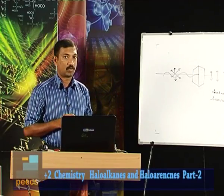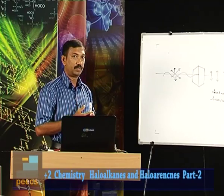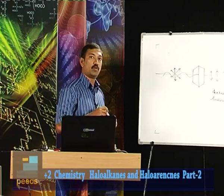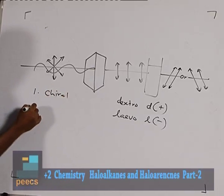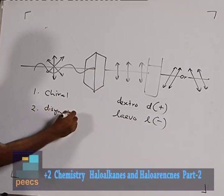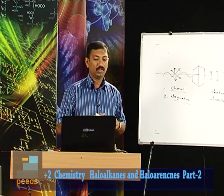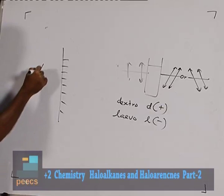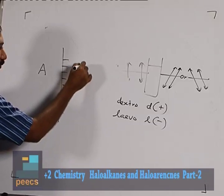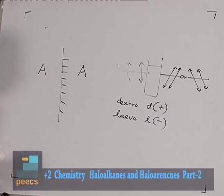What are the conditions for a compound to be optically active? Not all compounds like methanol or ethanol are optically active. There must be certain conditions. One condition is chirality — the molecule should be chiral. The second condition is that the molecule should be dissymmetric. These two are the conditions for a compound to be optically active. What is a chiral molecule? Suppose this is a mirror — when you place the letter A in front of this mirror, the image formed is superimposable on the object.